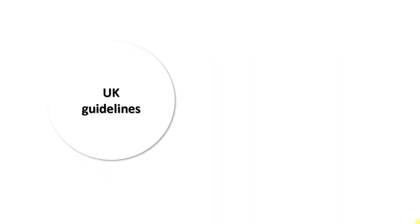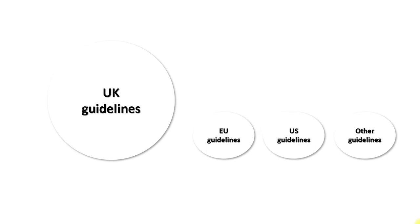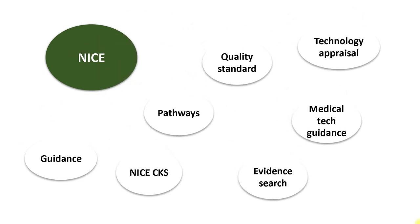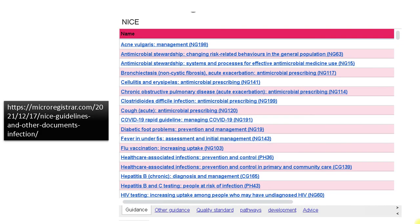Guidelines: Give preference to UK guidelines, as this is a British exam and local guidelines are aligned with UK practice. If you cannot find relevant UK guidelines, look for US or European guidelines — ESCMID or IDSA — but adapt suggestions to UK practice. NICE guidelines are a must-read. The NICE website has many sections: guidance, CKS, evidence search, quality standards, medical technology guidance, etc. The microregistrar.com page provides a list of NICE documents to help you decide which are relevant.